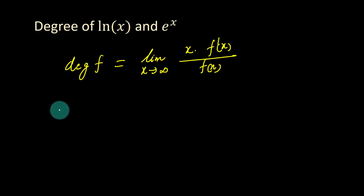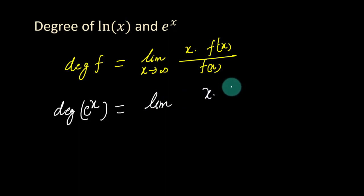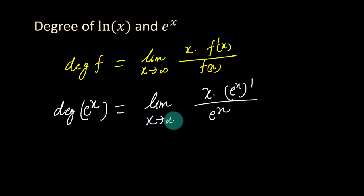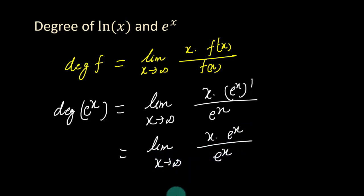Now we will calculate the degree of the exponential function e to the x, which is equal to the limit of x times the differential of e to the x upon e to the x, when x approaches infinity. The differential of e to the x is e to the x, so this becomes e to the x upon e to the x when x approaches infinity.